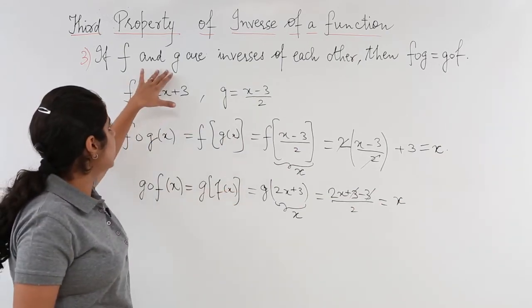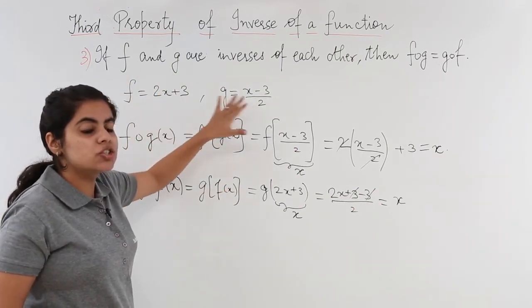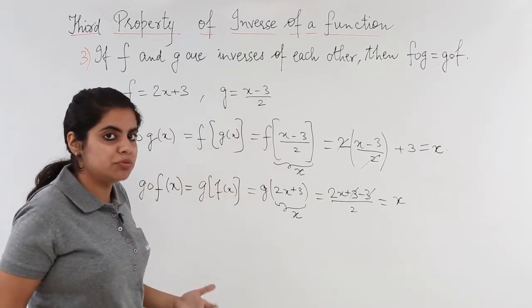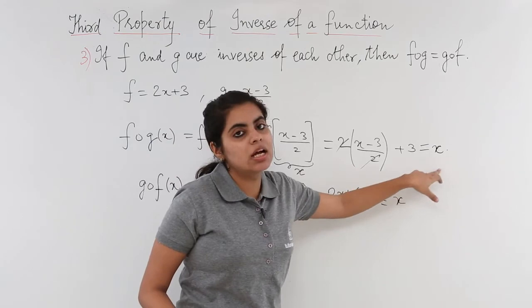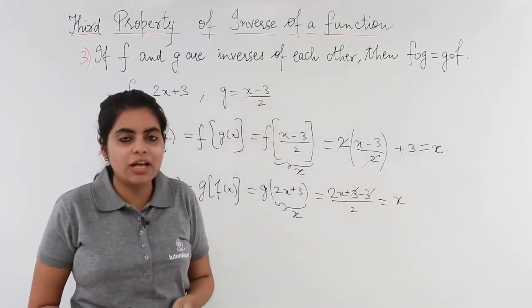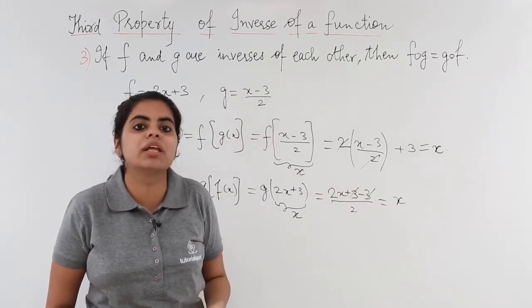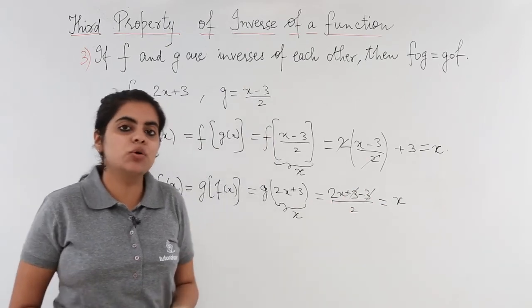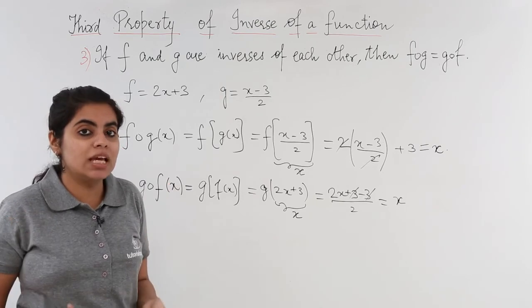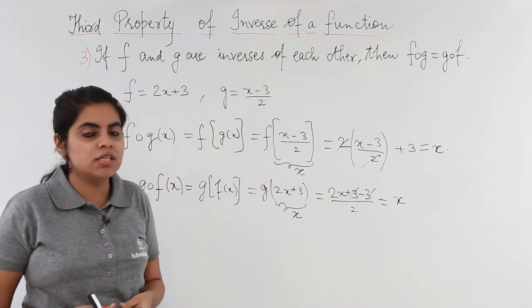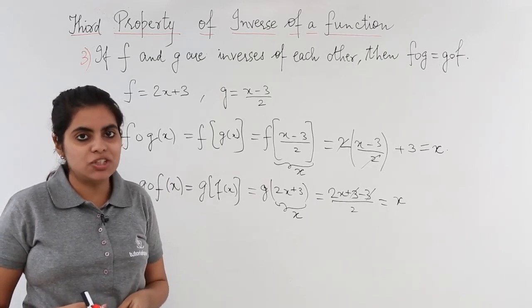The property is being proved that if we take two functions which are actually their own inverses, then their compositions will always come out to be equal, and it actually comes out to be equal to the variable. So in this video we saw how to compute fog and gof, and they come out to be same for two functions which are inverses of each other.